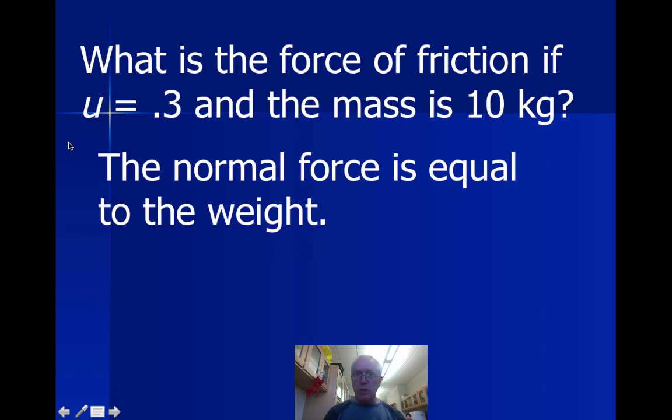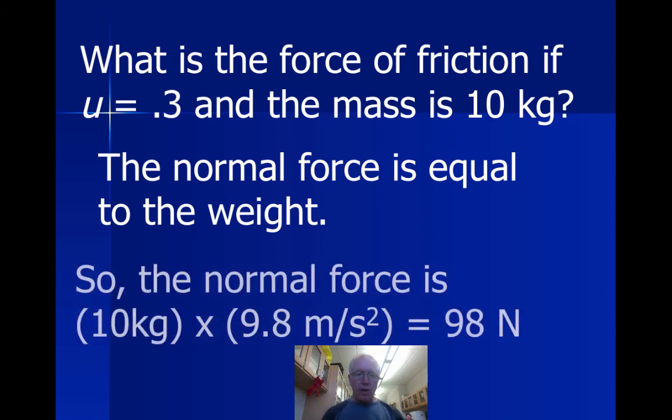So first of all, we're going to calculate the normal force by using our weight equation. Take the mass multiplied by g, the acceleration due to gravity, and we have a normal force of 98 Newtons. Okay, so we had to do that extra step before we could solve for the friction, remembering again that mass is not normal force. But using the mass we could calculate the weight, taking the mass multiplied by the acceleration due to gravity, and for our class the normal force and the weight will always be equal.